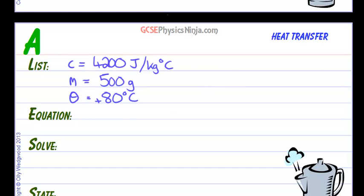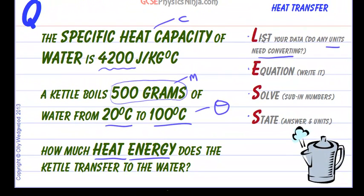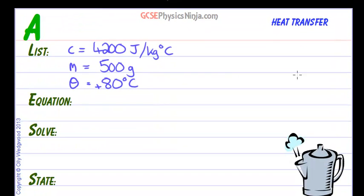And what are we trying to find? Because that's the other important part of the listing process. We're trying to find the heat energy that we have to give to the water. So we'll write down here E equals question mark joules.